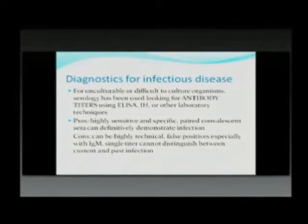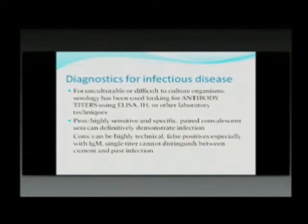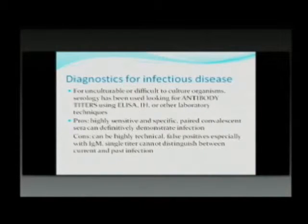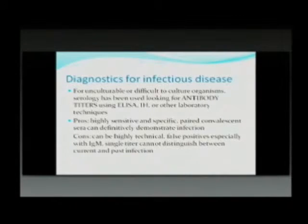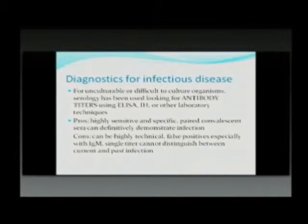False positives are also an issue, especially when dealing with IgM, which is very sticky because it's a pentamer. Many of us have had cases where both the IgM for typhoid and dengue are positive, and you're not sure what to do. Additionally, antibody tests cannot distinguish between current and past infection. For example, with leptospirosis, many people may have low levels of antibodies due to constant exposure, but that does not necessarily correlate to active disease.